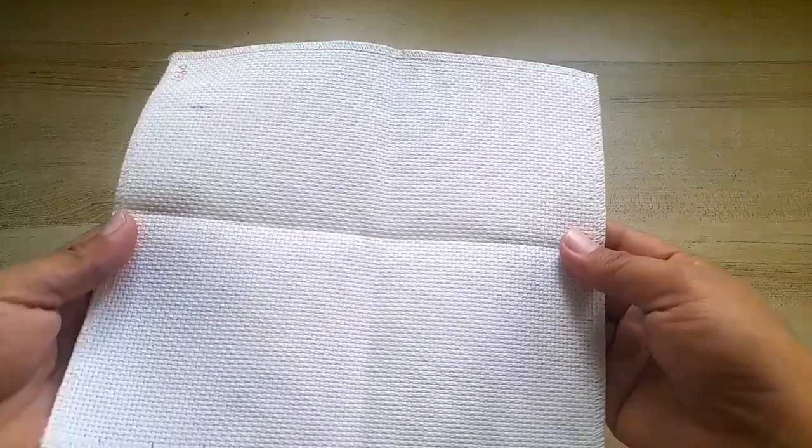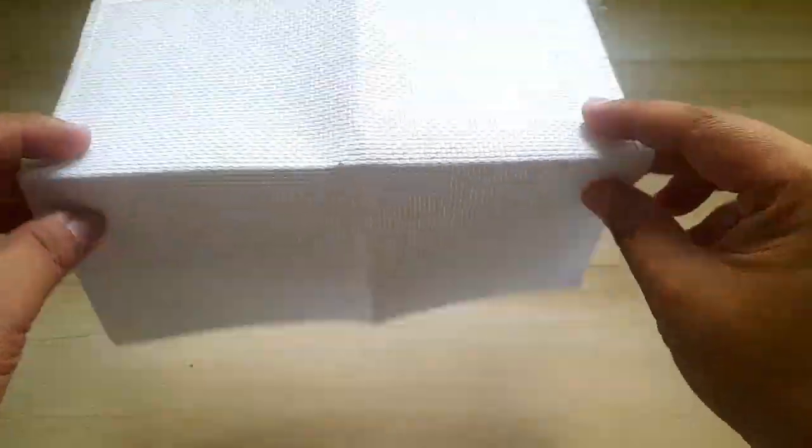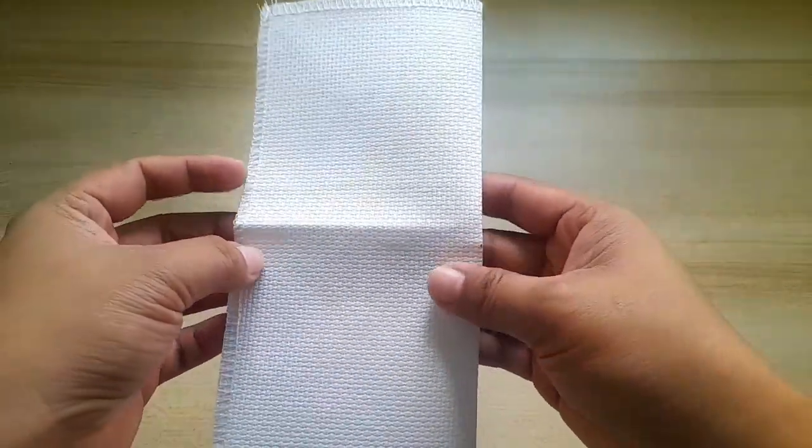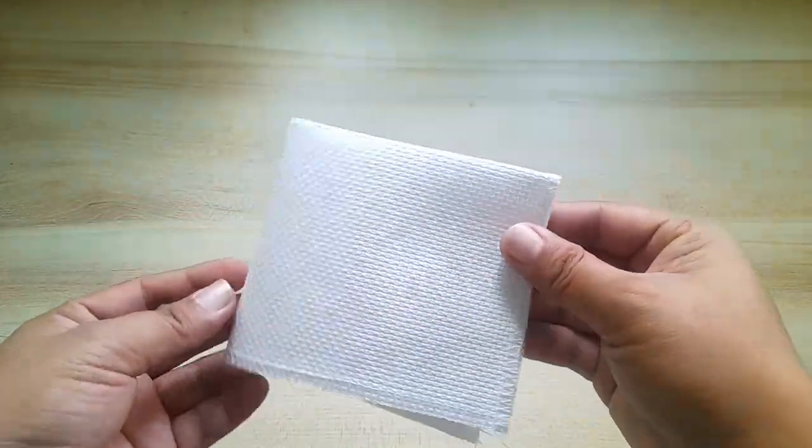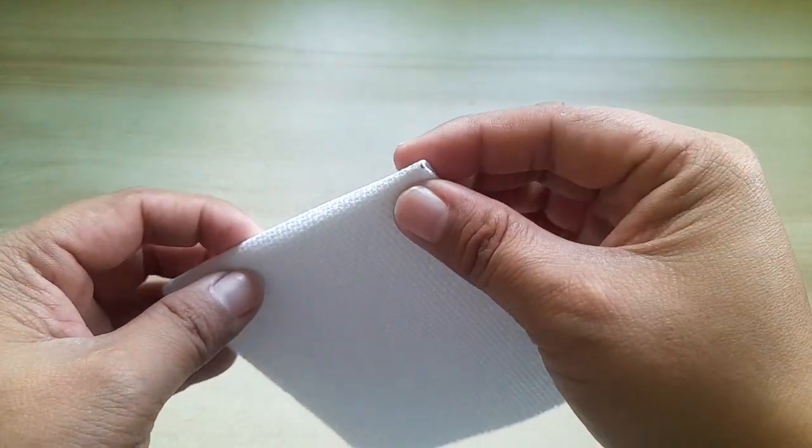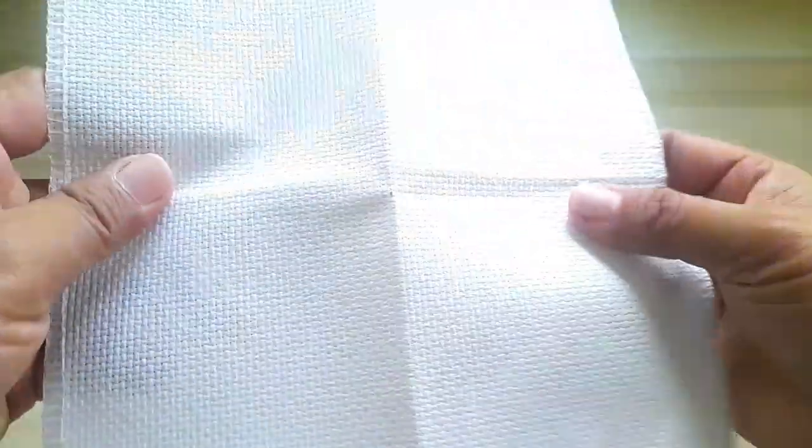We are using Aida cloth 14, and to be able to find the center we folded twice like this. As you can see, I'm already marked the middle with a pencil to secure where the middle was.